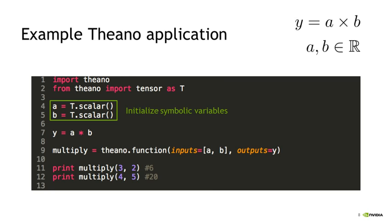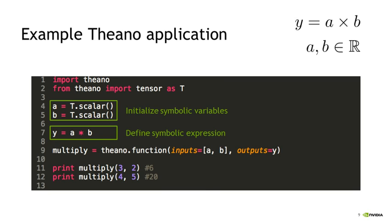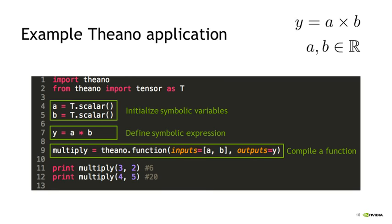In this example, our application computes the product of two scalar values A and B and outputs the value Y. We define our symbolic expression using symbolic variables A and B, and Y automatically inherits its type as a scalar. But we have no way of giving numeric values for A and B yet. So we compile a Python function using the Theano.function method, defining the inputs and outputs. Theano automatically uses the symbolic expressions to work out how to compute Y from given values of A and B, and then we can apply that function to numeric values.